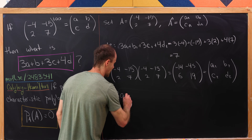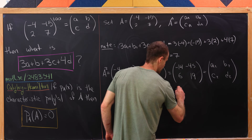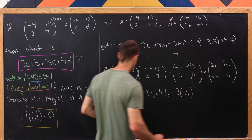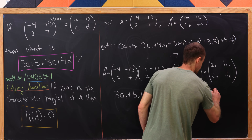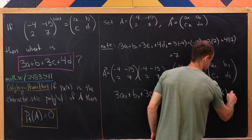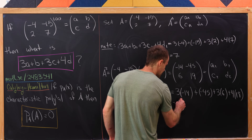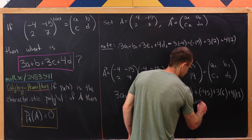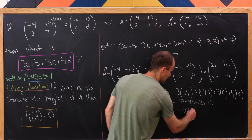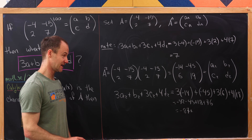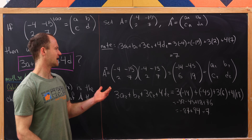Now let's check this combination: 3A_2 plus B_2 plus 3C_2 plus 4D_2 equals 3 times negative 14 plus negative 45 plus 3 times 6 plus 4 times 19. That's negative 42 minus 45 plus 18 plus 76, which gives negative 87 plus 94 equals 7. We got the same thing again.